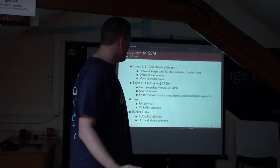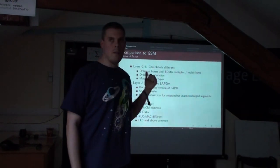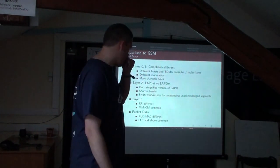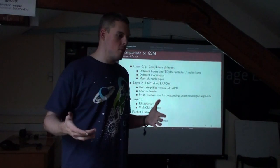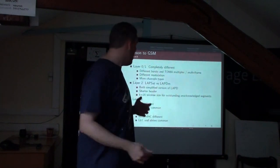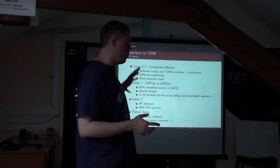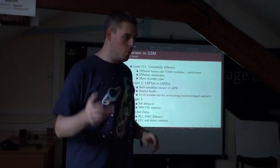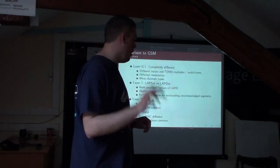At layer 3, there are three sublayers. Radio Resource Management is pretty different since the radio is completely different. However, everything from Mobility Management and Call Management upward is exactly common — when you look at the GMR spec it just says 'see GSM section 4.8.' For packet data, RLC and MAC replace the RR sublayer for radio resource management of packet data, and everything from LLC upward is exactly GPRS.